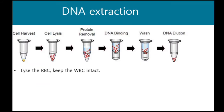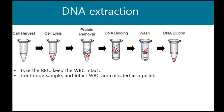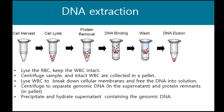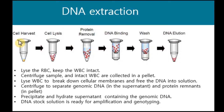The extraction process starts with the lysis of red blood cells while keeping the white blood cells intact, which are later collected in a pellet. The WBCs will then lyse to break the nucleus and cellular membranes so that the DNA is freed into the solution. The solution is then centrifuged to separate the genomic DNA in the supernatant and the protein residue in the pellet. The supernatant containing DNA undergoes elution to wash away residual proteins or impurities before it is ready for amplification.